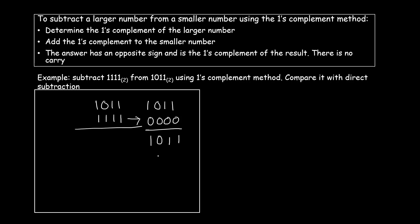Notice that you are not getting any carry here. When you don't get a carry, it means the number is in its one's complement form. To get the actual result you will find the one's complement of this result: all ones are changed to zero and all zeros are changed to one. But that's not the final answer — you have to perform one more action: the answer has an opposite sign, so you must negate it.